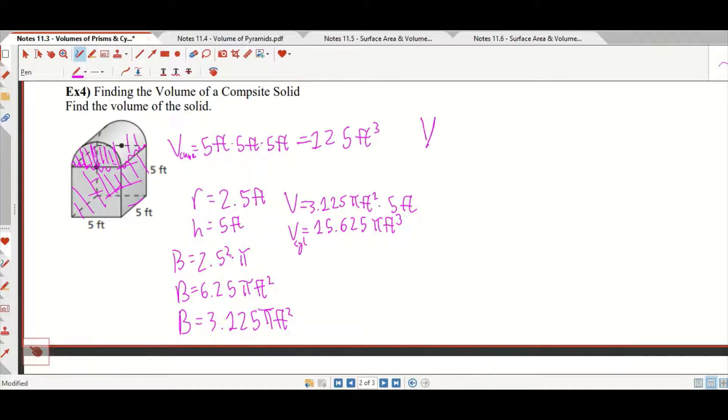So the volume of the actual object that we're interested in is the volume of the cube, 125 feet cubed, plus the volume of the cylinder, 15.625 pi feet cubed. You could factor out that feet cubed if you felt like it, which would mean that was 125 plus 15.625 pi feet cubed.